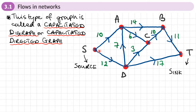The arrows tell us the direction of the flow of water, for example, and these numbers represent the capacity — how much water, or liquid, or electricity, or an internet network — what's the maximum capacity of each one of these arcs. For example, arc AB has a maximum capacity of 14.